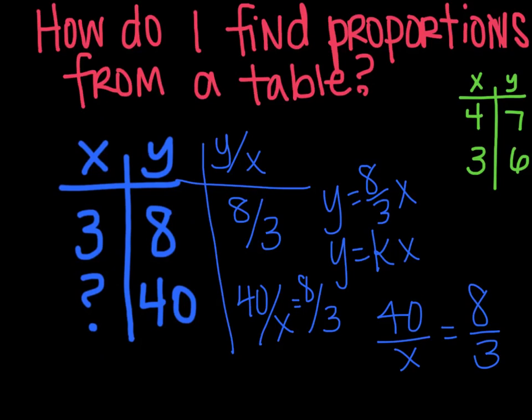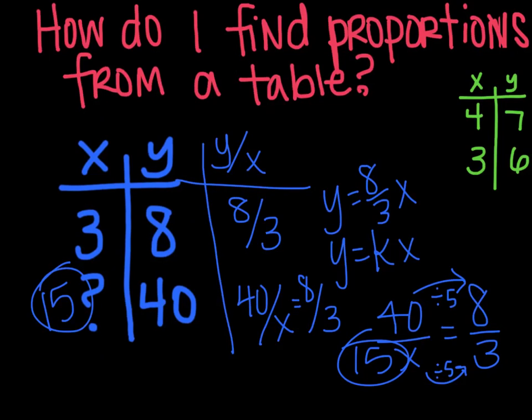And then you want to find what that missing value is. You can think about it as a fraction. If I were to reduce this down, I divided by 5 to get my answer. So what number divided by 5 will give me 3? Well, that answer is 15. So 15 is that missing value.